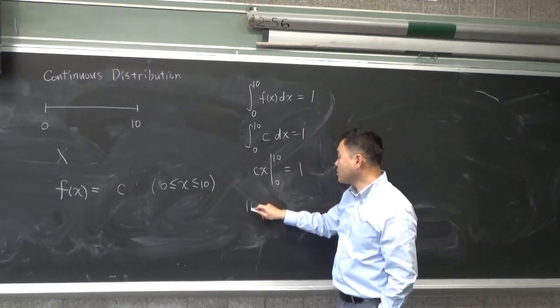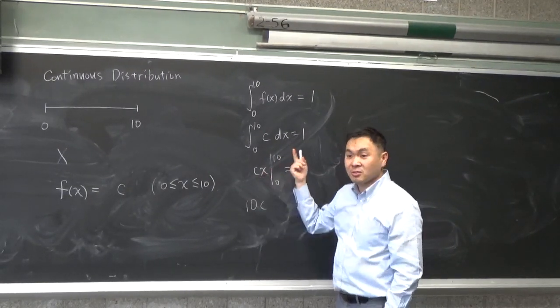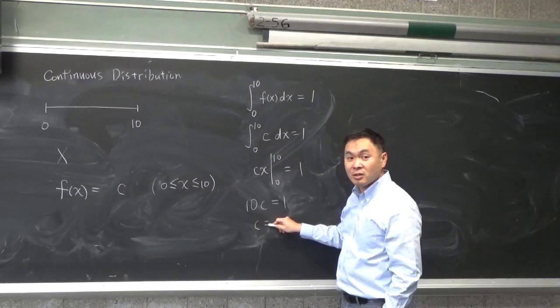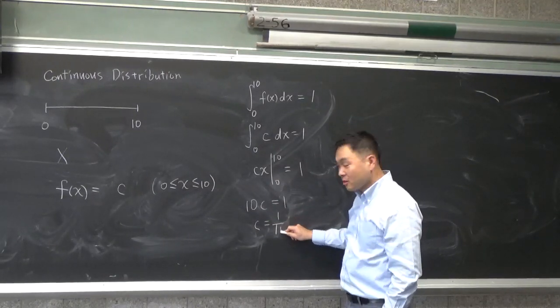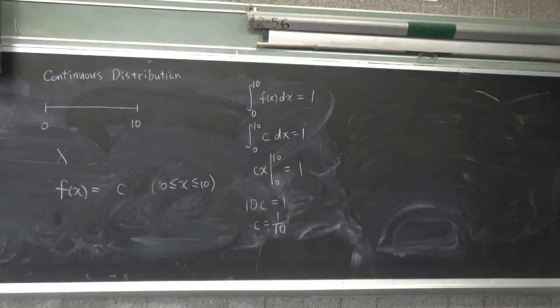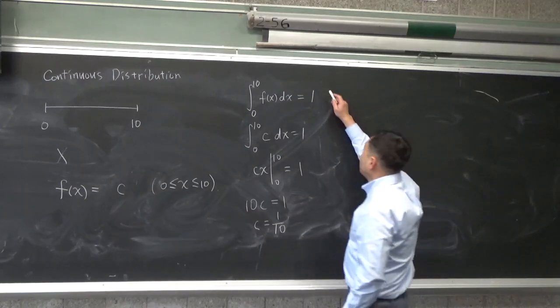It goes to 1. So you're going to get, when 10 goes in here, you get 10c. When 0 goes in, that's 0. So 10c is equal to 1. That means c has to be 1 tenth. So you have c equals to 1 tenth.